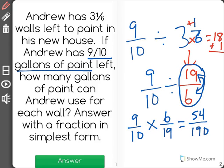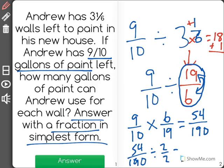Now be careful, because it says to answer with a fraction in simplest form. So we need to take this fraction, fifty-four over one ninety, and simplify it. I know that I could divide both of these numbers by two, because they both end with an even digit, and that will leave me with twenty-seven over ninety-five.